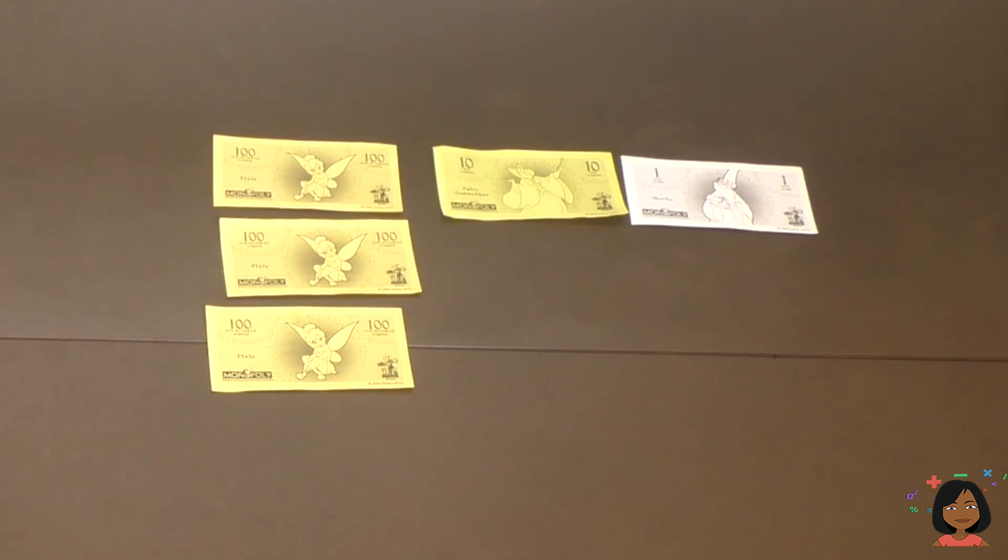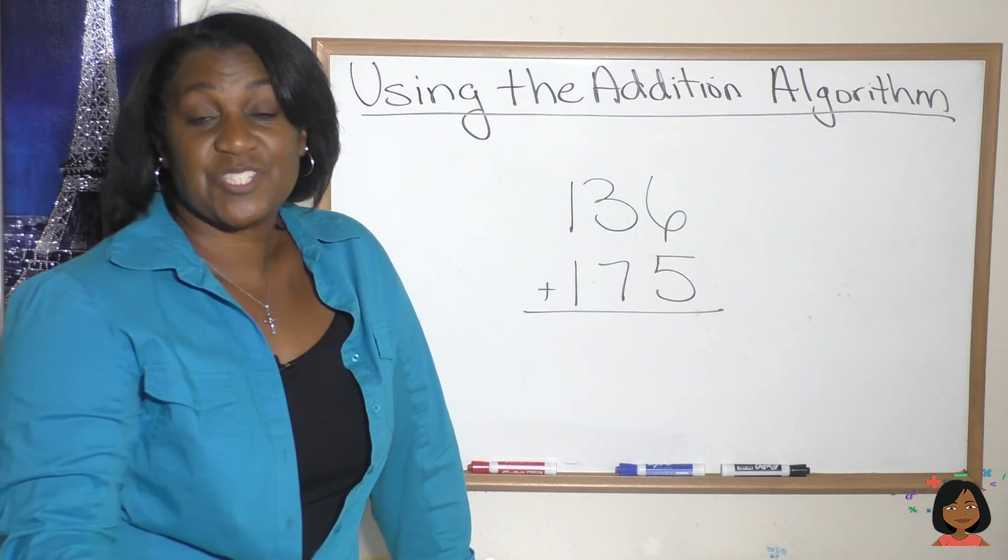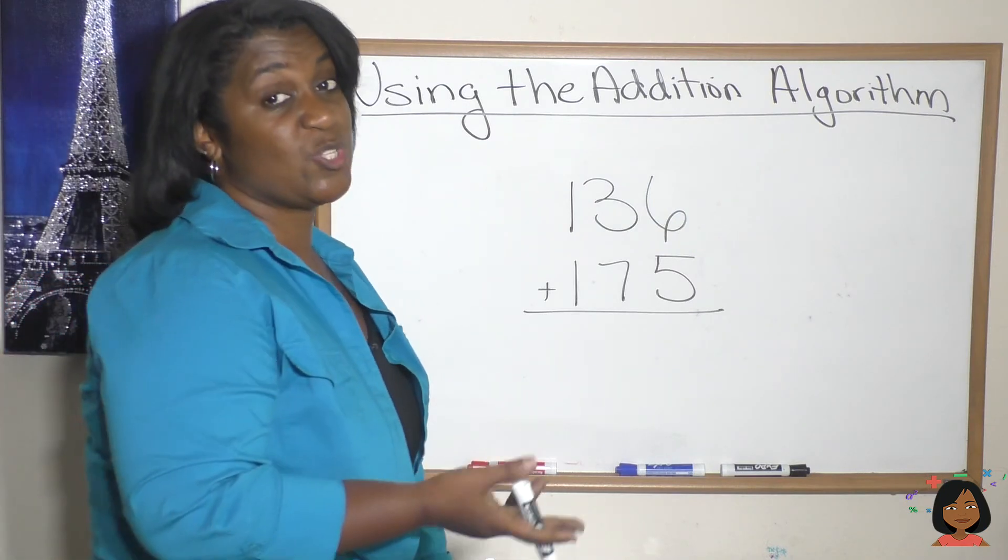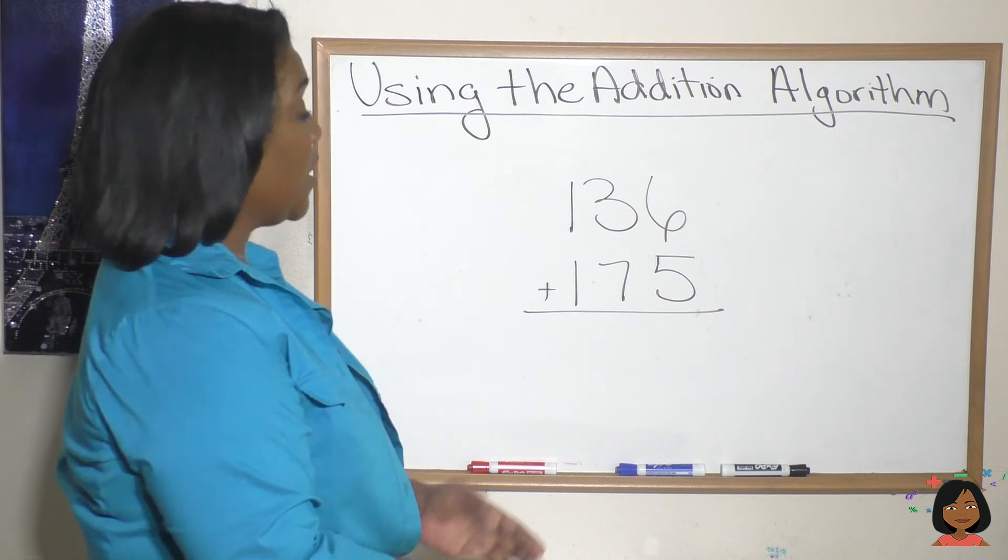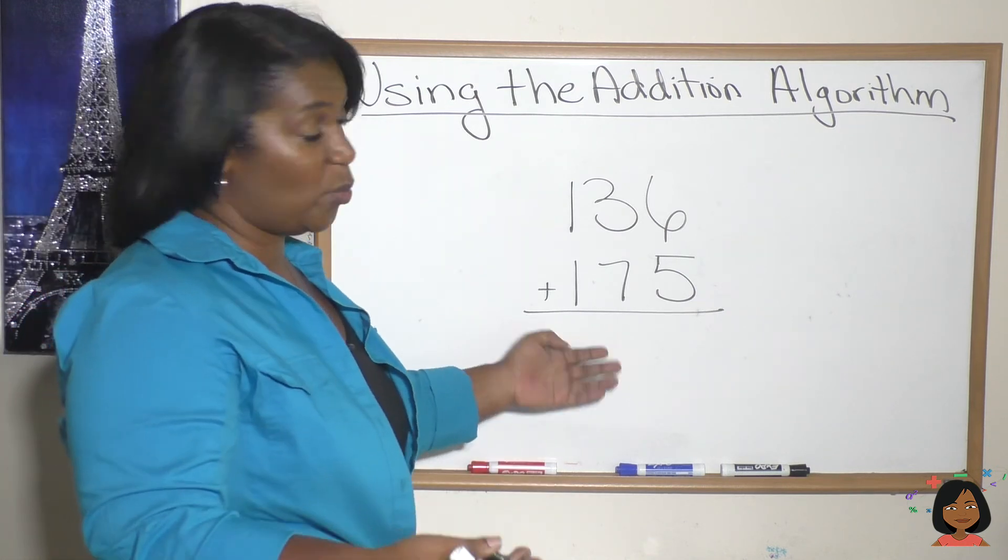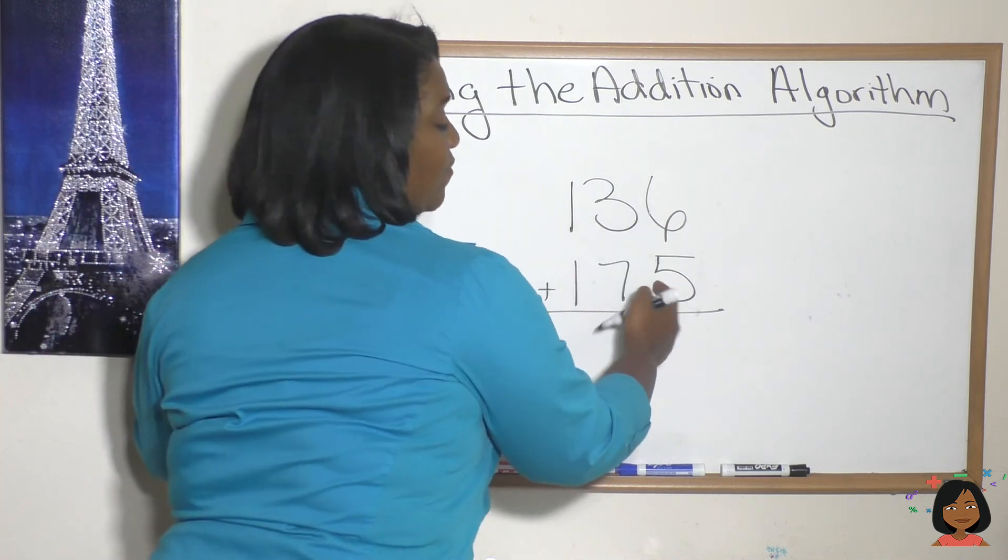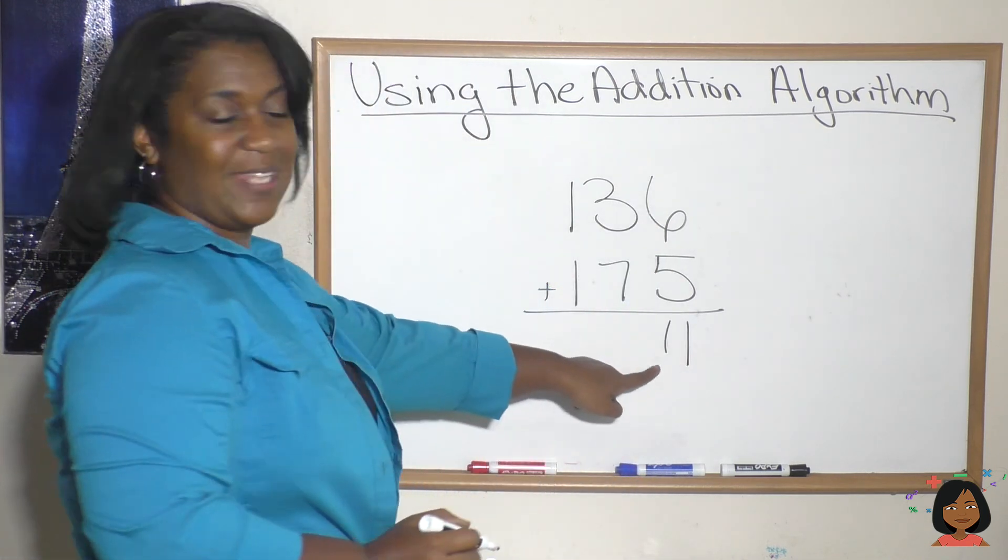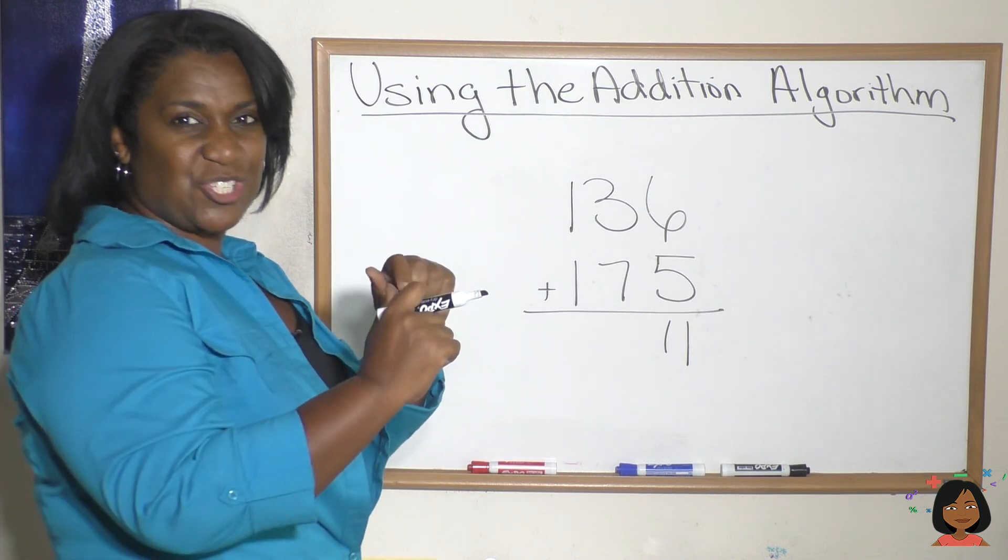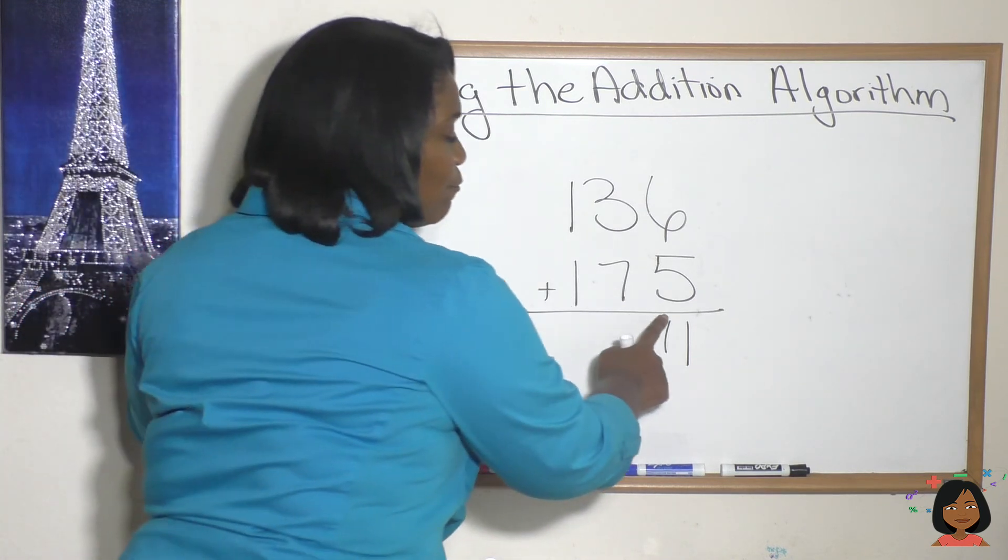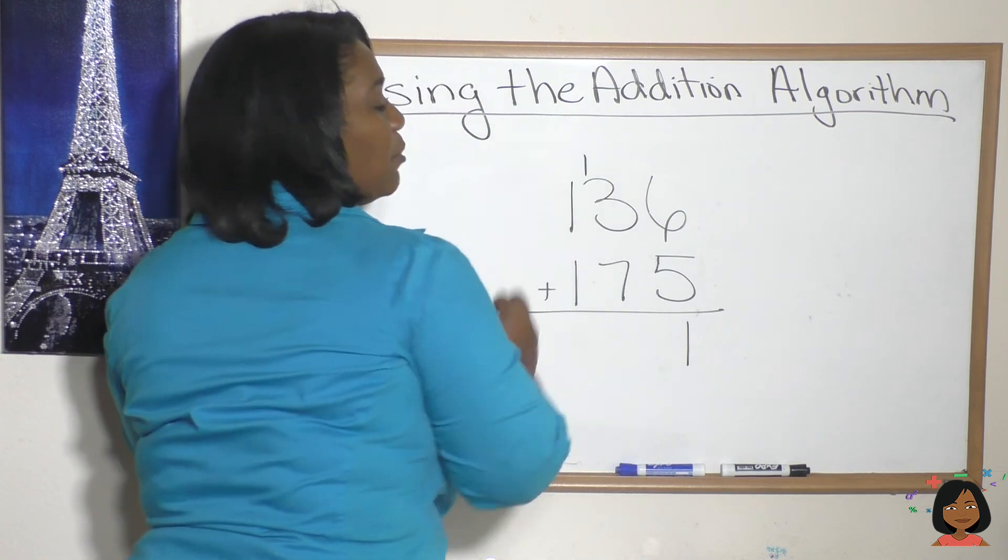Let's do that again, but this time let's not use the actual money. Let's use what we know about place value. So when adding, we always start with the ones place. Let's do it. 6 + 5 is 11, so I could write eleven here, but let's go ahead and exchange ten of those ones for a ten. So I'm going to erase this one here and put it up here because now it's in the tens place. 1 + 3 is 4, 4 + 7 is 11.